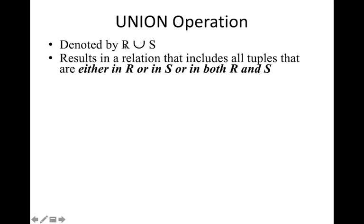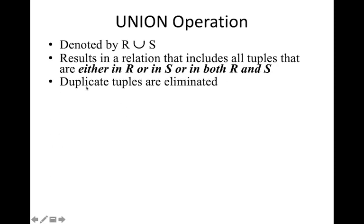The first operation is union, denoted by R union S — the same notation as in set theory, where R and S are relations or tables. The result is a relation that includes all tuples that are either in R, in S, or in both R and S. Duplicate tuples are eliminated, just as duplicate elements are eliminated in set theory union.